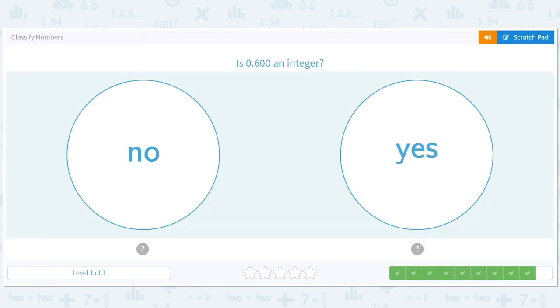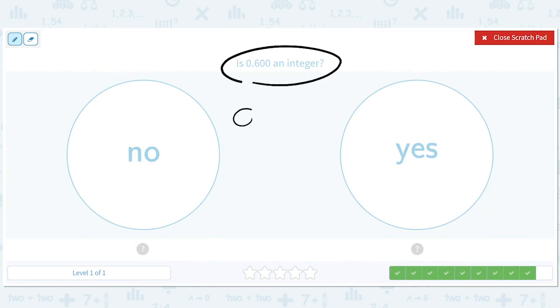Is 0.6 an integer? What do you think? Well, here's 0, here's 1. 0.6 is in between. That's no good. So, oops. No, it's not an integer.